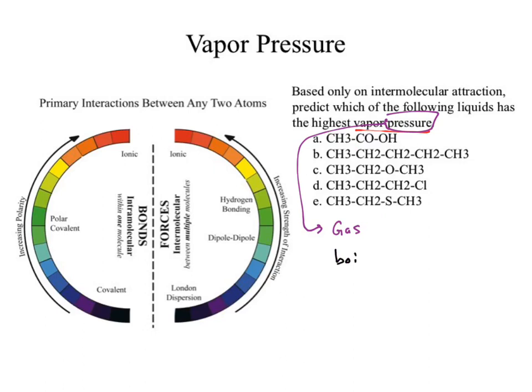What measures the ability for a liquid to turn into a gas? The boiling point. So we can repackage this question: instead of looking at vapor pressure, we can look at boiling point. What would a highest vapor pressure mean? Which one turns into a gas the easiest? The lowest boiling point would be the easiest to turn into a gas. If it's a high boiling point, that means I have to put in lots of energy. So really, what I'm asking for is: what has the lowest boiling point?